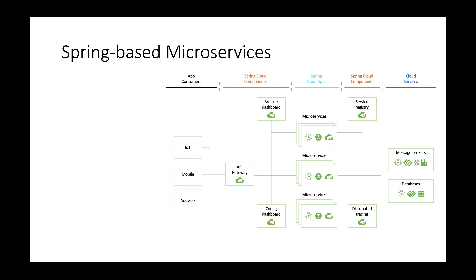Let's look at a typical layout of Spring components for deploying Spring-based microservices. The center here represents business apps or microservices interacting with data, messaging, cache, and directories on your right. The business app consumers on your left are interacting with your business apps in the center. The Spring Cloud middleware components are laid around business apps.